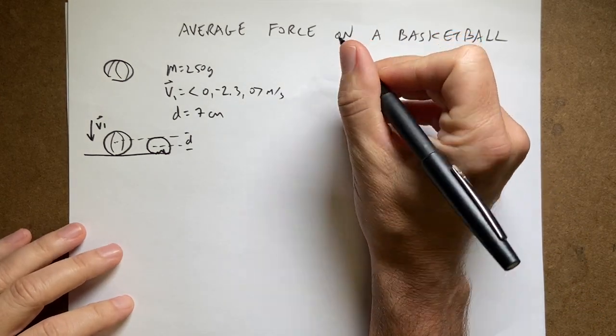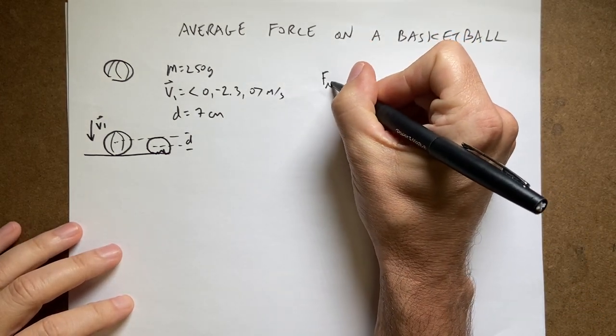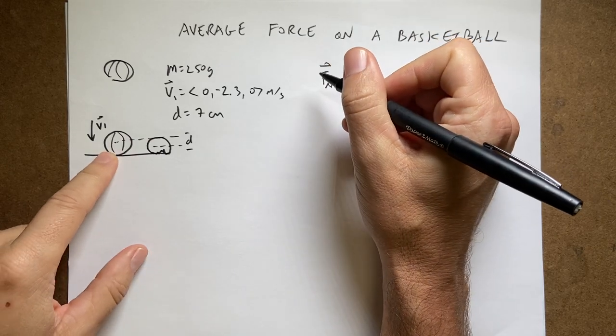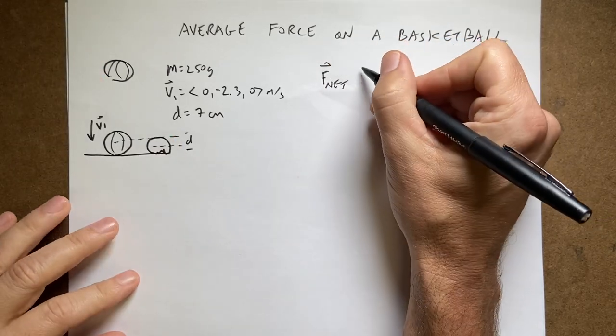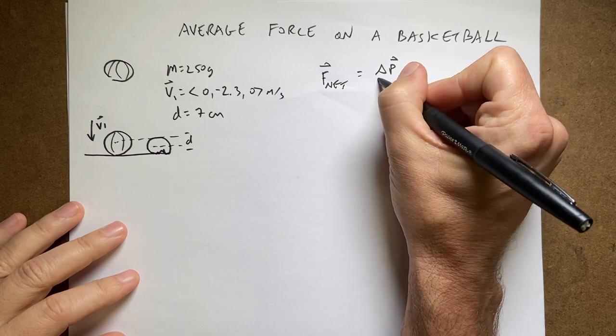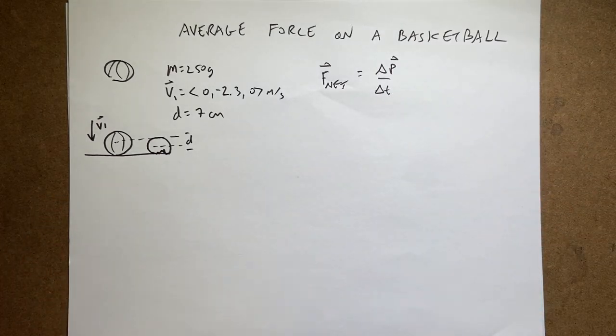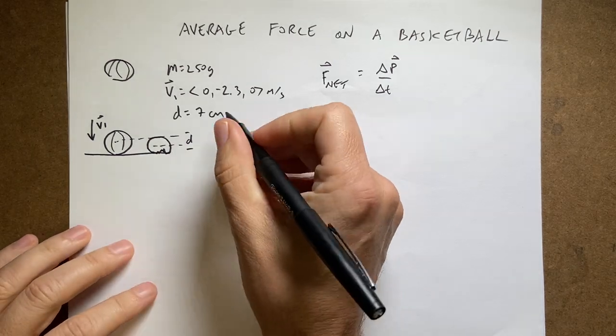So hopefully you're thinking, well, F_net I can do that. F_net is the force on the floor, the only thing pushing on it pushing this way, and that would be the change in momentum over the change in time. Yes, good point. So I know the mass, I know the initial velocity, I know the final velocity.